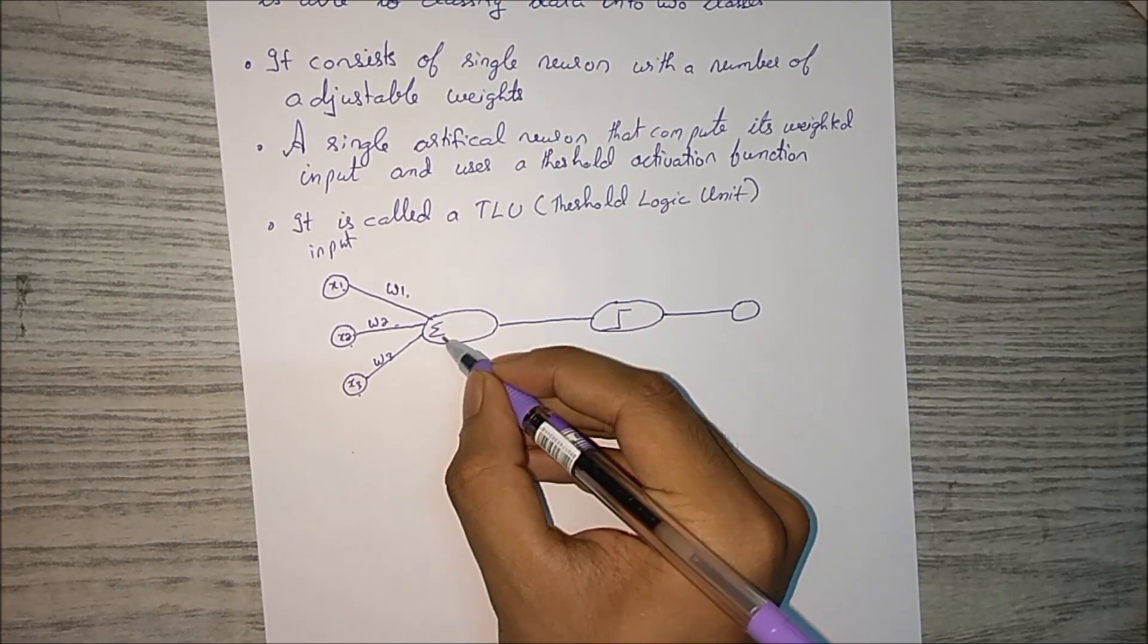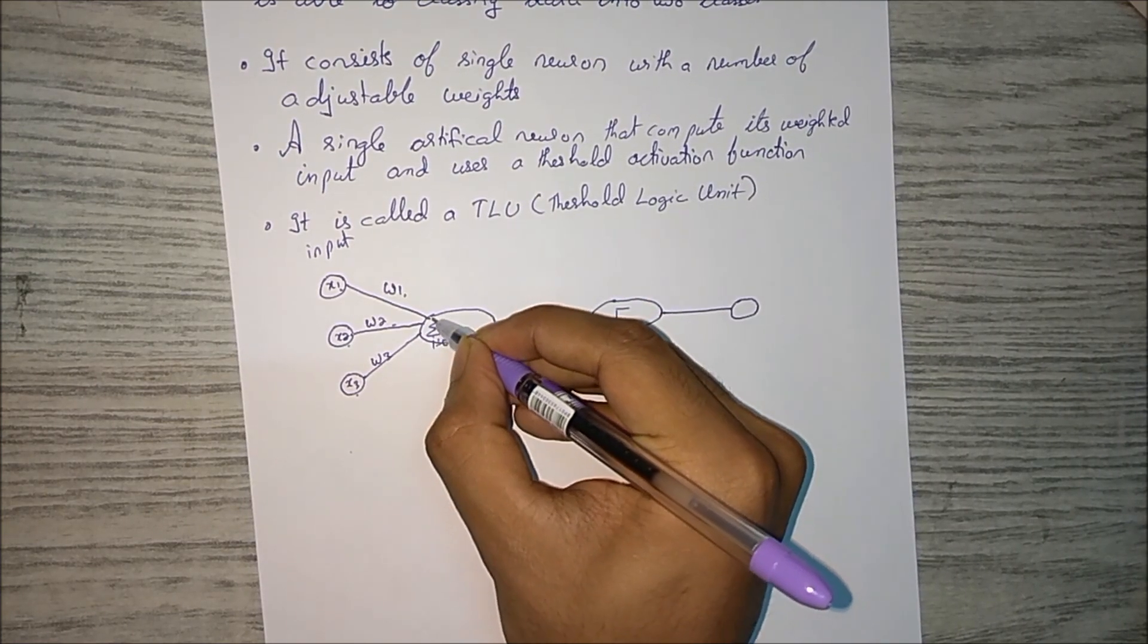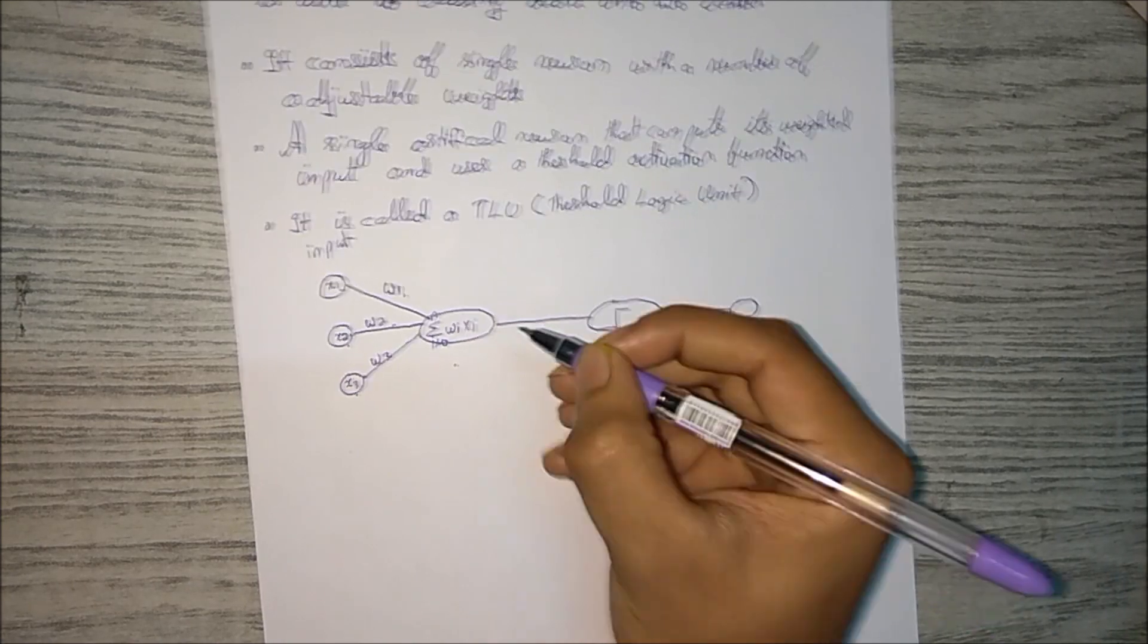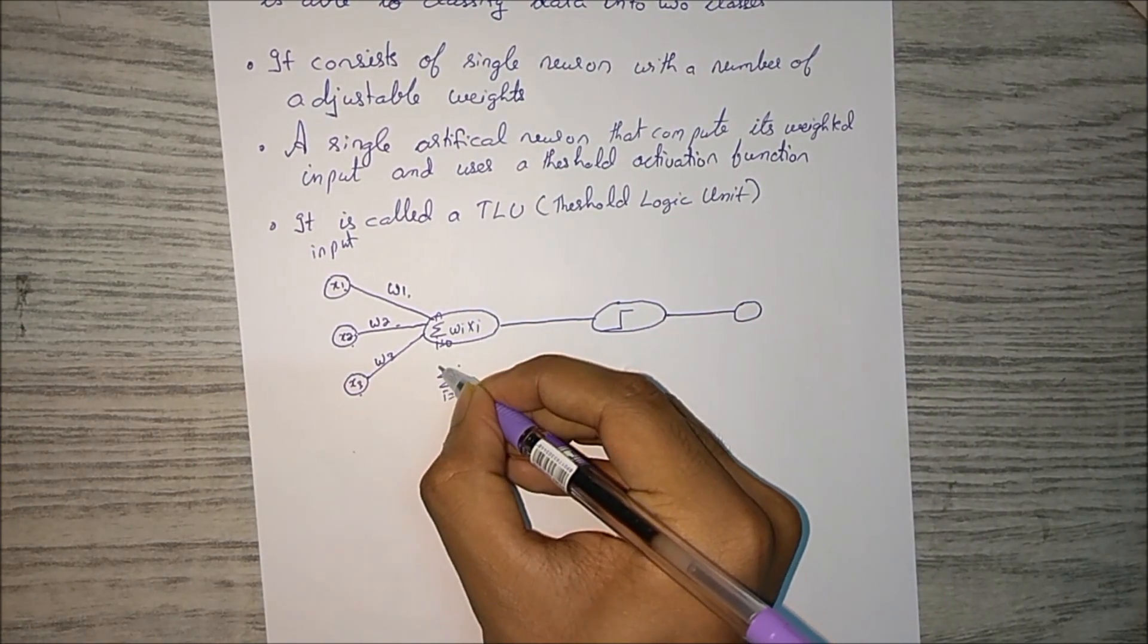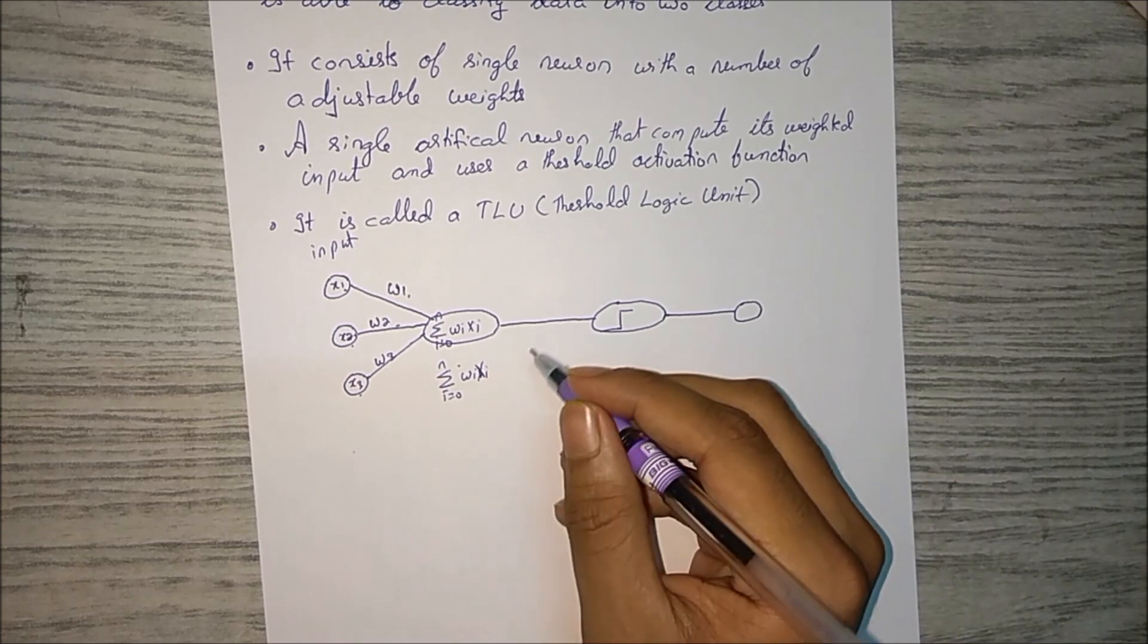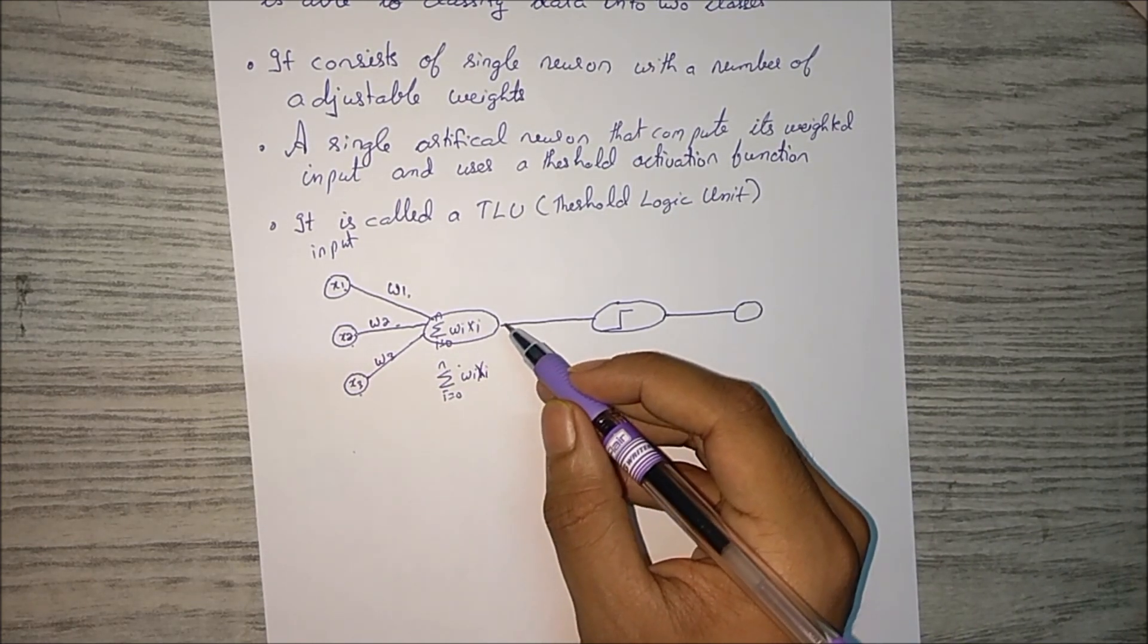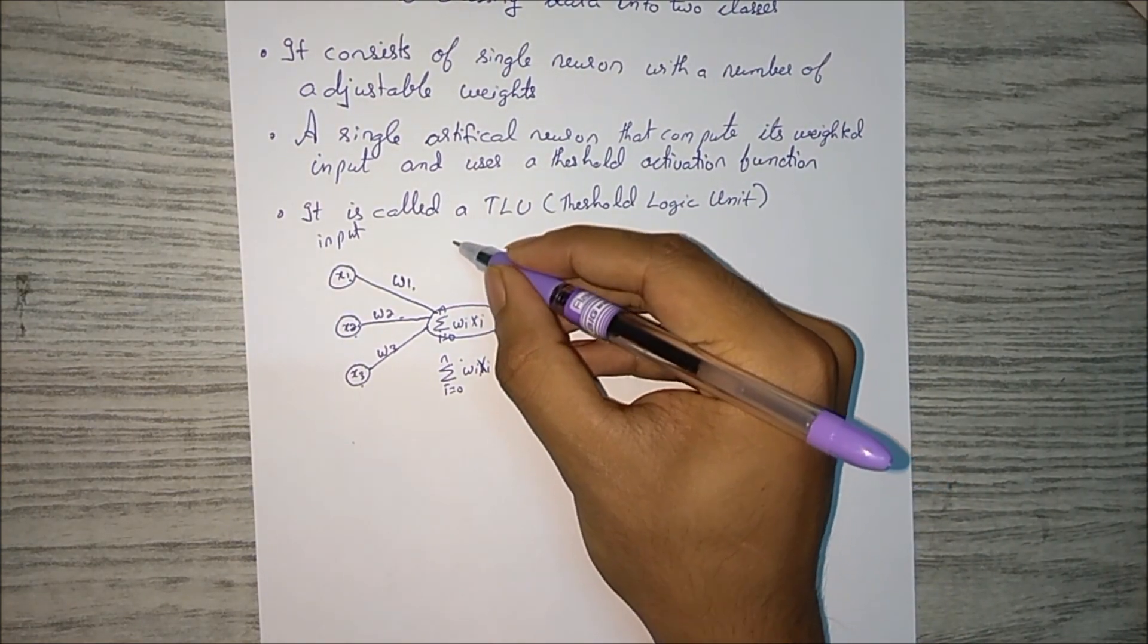So what happens over here is all the weight, this function, what it does is: summation i equal to 0 to n, wi xi. Let me write this neatly once again: summation i equal to 0 to n, wi xi. So what this does is it adds everything over here.